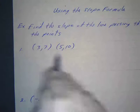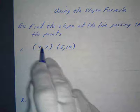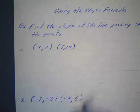So I want to find the slope. The problems are usually written like this: Find the slope of the line passing through the two points. So (3,7) (5,10).